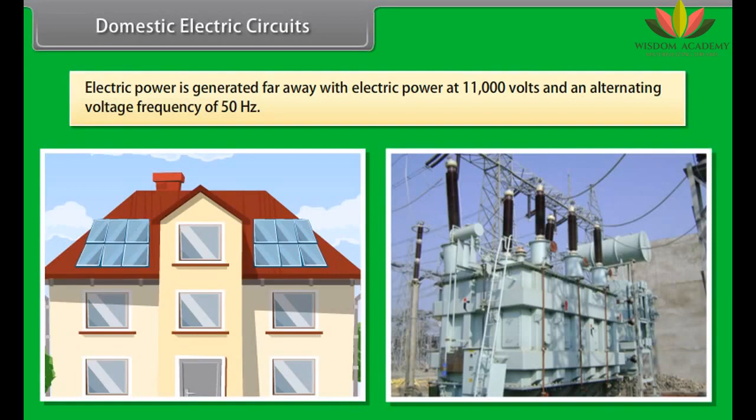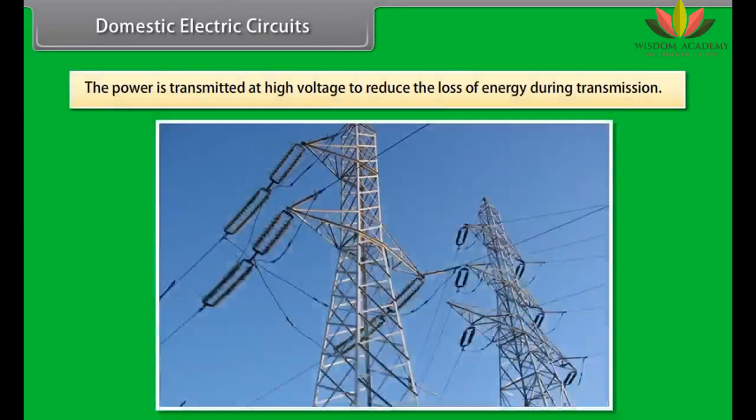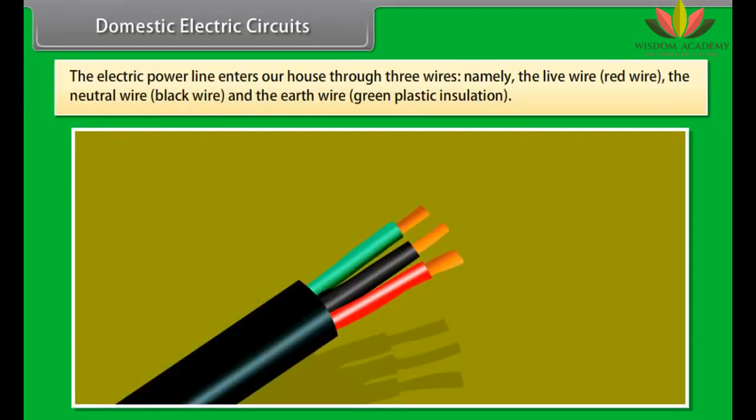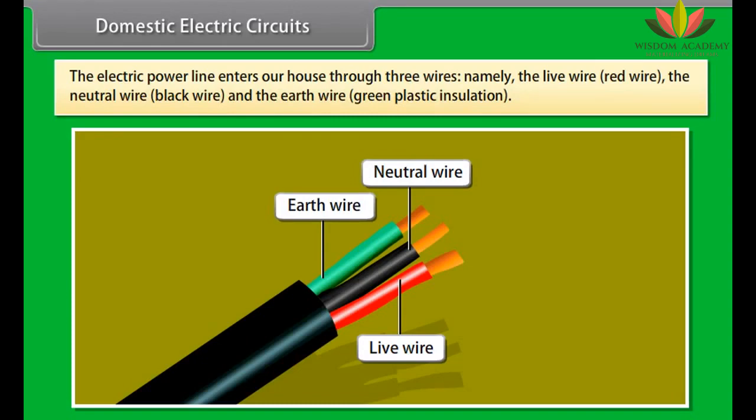Electric generators operate based on electromagnetic induction. That is, whenever a conductor moves to a magnetic field, a current is induced in this conductor. If a magnet is spinning inside a coil, alternating current is induced in the coil. Alternating current changes direction after equal intervals of time. The other type of current is direct current which does not change direction with time.